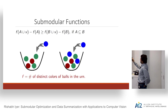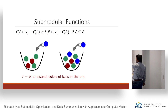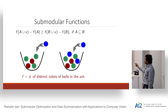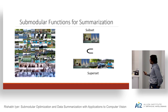A natural intuition: define a function f as the number of distinct colors of balls in a set. On the left you have five balls, on the right seven. The left-hand case is a subset of the right-hand case. Adding a blue ball to the left gives a gain of one; adding it to the right gives a gain of zero — diminishing returns. This is a submodular function, specifically known as a set cover function.